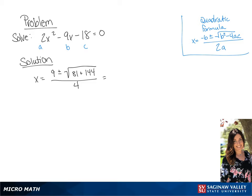If we simplify this, we're going to get 9 plus or minus the square root of 225 all over 4.